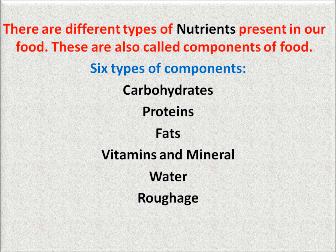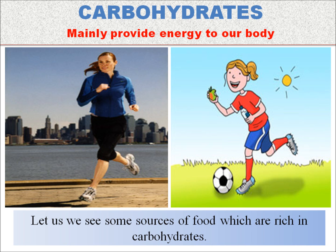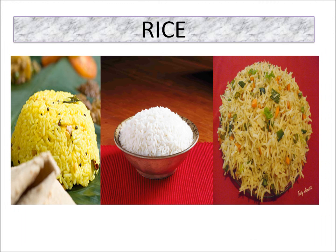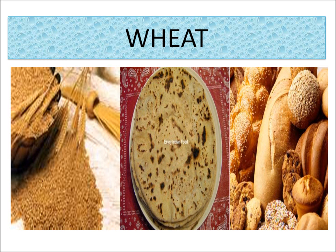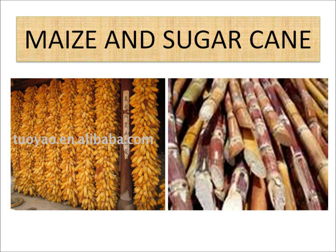Components of food are carbohydrates, proteins, vitamins, fats, water, and roughage. Carbohydrates mainly provide energy to our body. Some food items which are rich in carbohydrates are rice, wheat, potato and sweet potato, maize, and sugarcane.